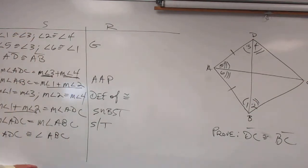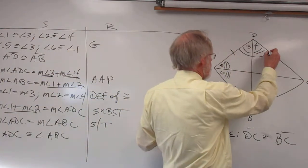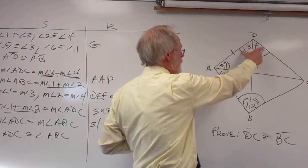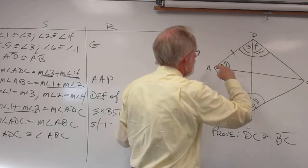Alright, now what we have, this is congruent to this, we have angle side angle to get the two big triangles congruent.